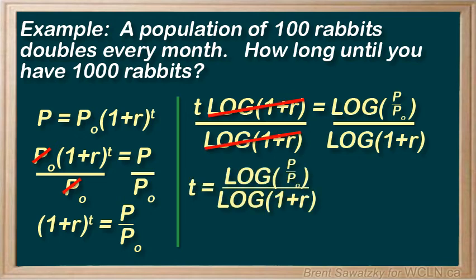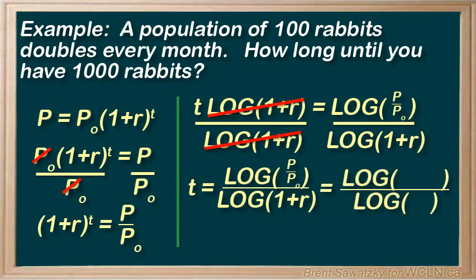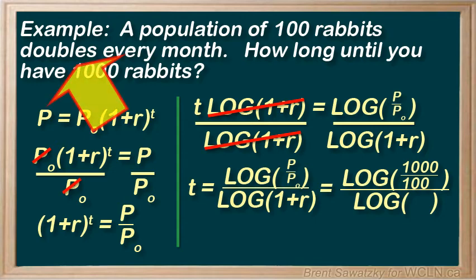We can plug in our numbers. So P over P₀ is, well, a thousand, the new population, over 100, the original population. And the rate is, hmm, we're told that the population doubles each compounding period, which means that the population grows by 100 percent each month.